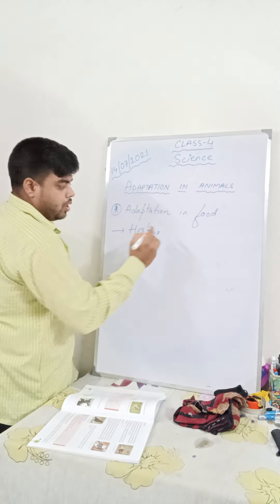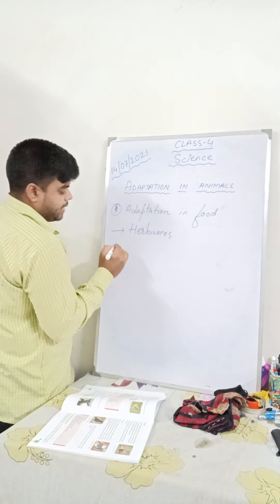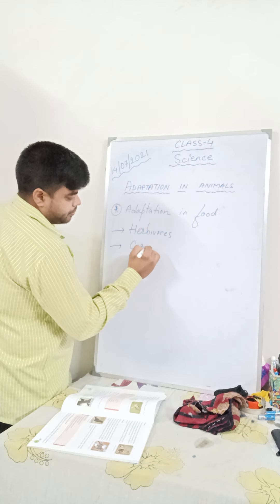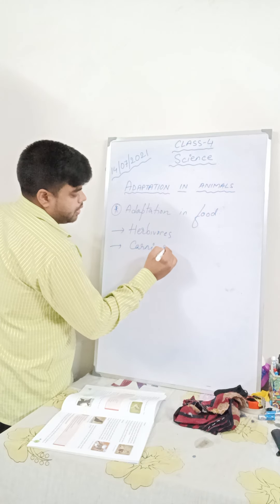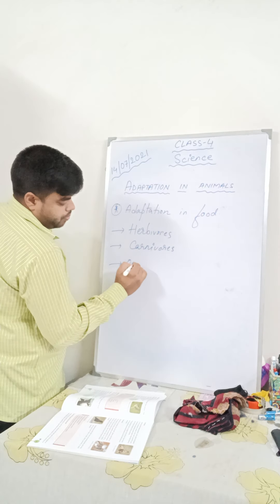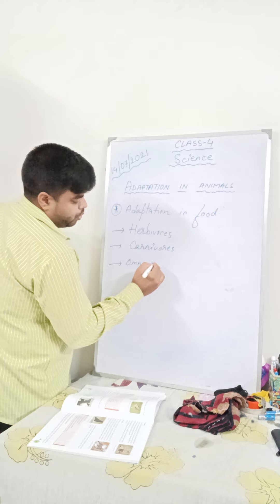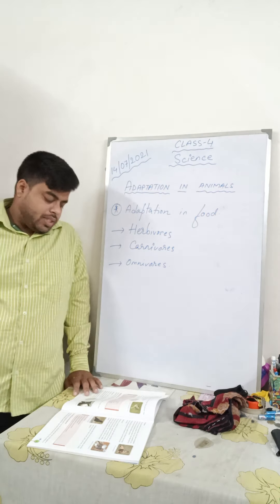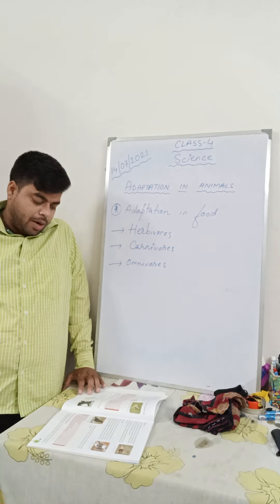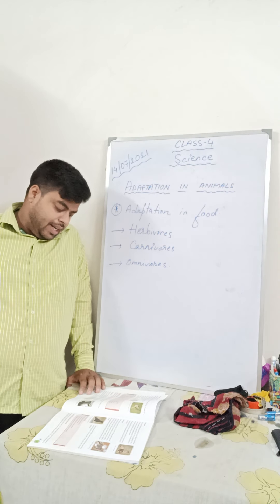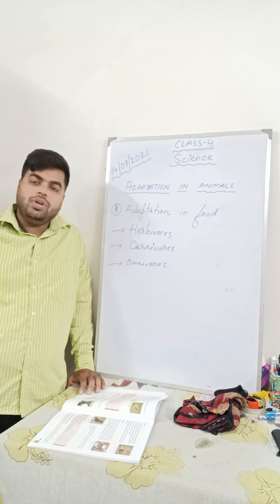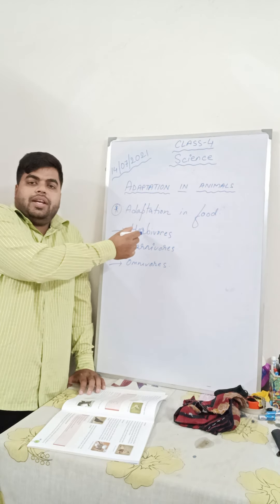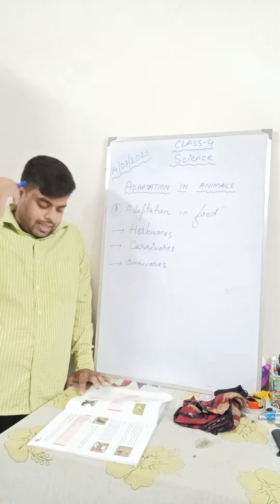Herbivorous are animals that feed only on leaves and green plants. Carnivorous feed only on flesh. Omnivorous feed on both green plants as well as animals. Herbivorous are plant eating animals — for example cows, buffaloes, goats, and sheep. They have sharp front teeth that are highly developed for eating and grinding food.